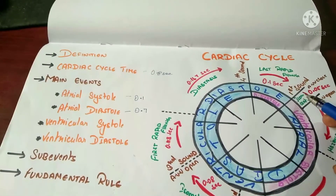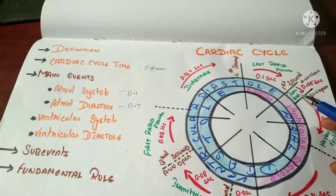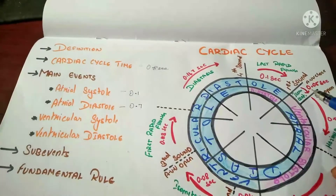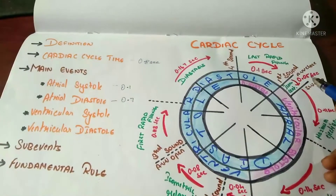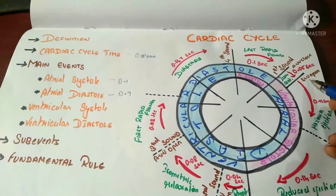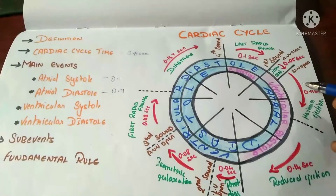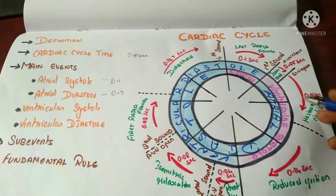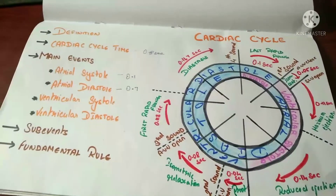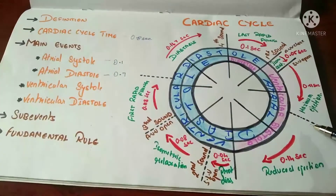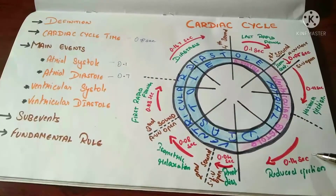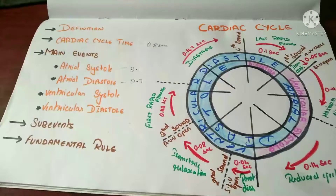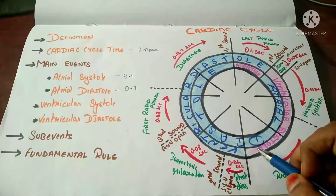When the AV valve closes, the semilunar valve takes some time to open. This period is known as the isometric contraction period (0.05 second) — the ventricles are contracting, holding blood in a closed cavity as both valves are closed. Next is the maximum ejection period, during which the semilunar valve opens and blood is expelled from the ventricles; this accounts for 0.11 seconds. Then the reduced ejection period follows as ejection slows down, lasting 0.14 second. These three — isometric contraction, maximum ejection, and reduced ejection — complete the ventricular systole sub-events.